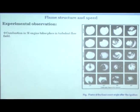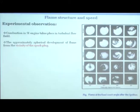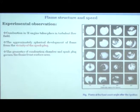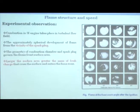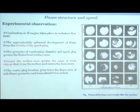Combustion in an SI engine is in a turbulent flow field. There is approximately spherical development of the flame front from the vicinity of the spark plug. The geometry of the combustion chamber and spark plug location govern the flame front surface area. Larger surface area means a greater mass of fresh charge crosses the surface and enters the flame zone. The center plug location gives twice the flame area of side flame geometry and burns twice as fast.